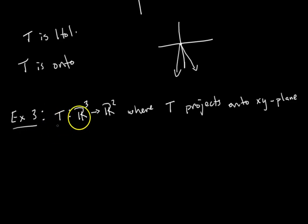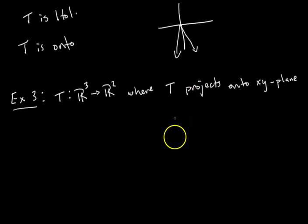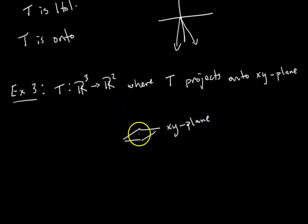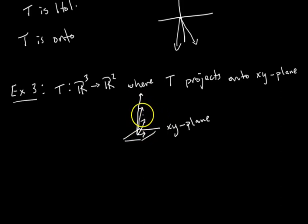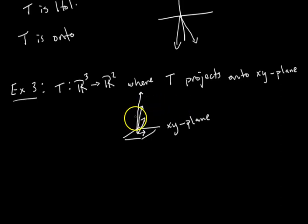In the third example, we're taking input vectors in R3 and transforming them into output vectors in R2. The transformation projects vectors onto the xy-plane. Is this transformation one-to-one? Projections tend not to be one-to-one. I could take multiple input vectors — as long as their x and y components are the same, it doesn't matter what the z-component is. When we project onto the xy-plane, we get the same output vector. So you have multiple inputs corresponding to one output, and it's not one-to-one.